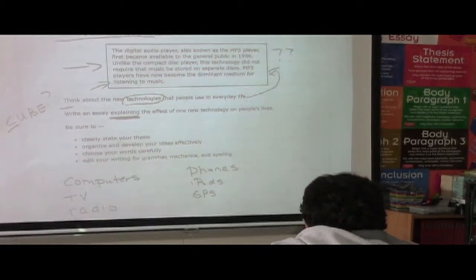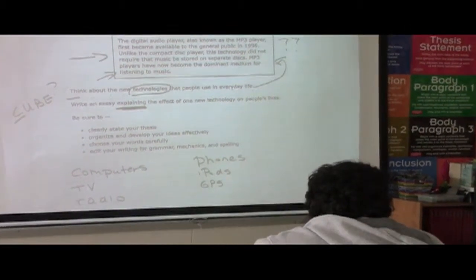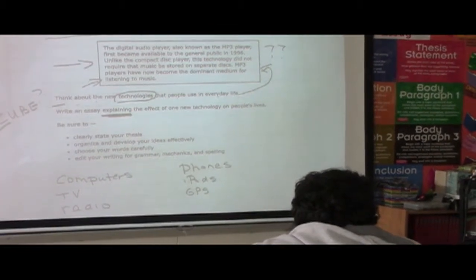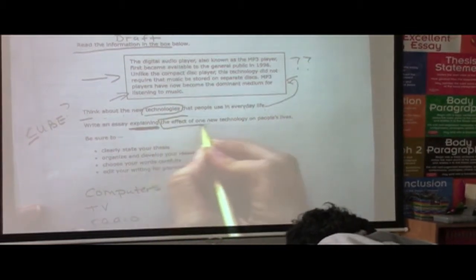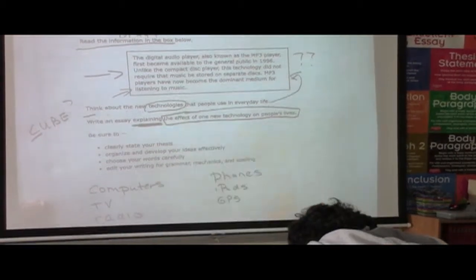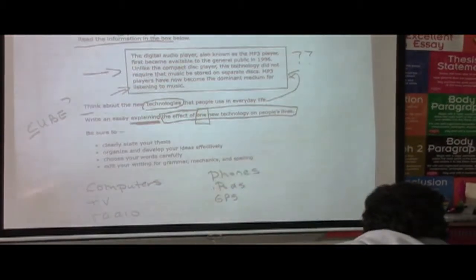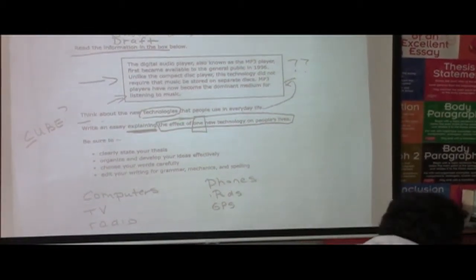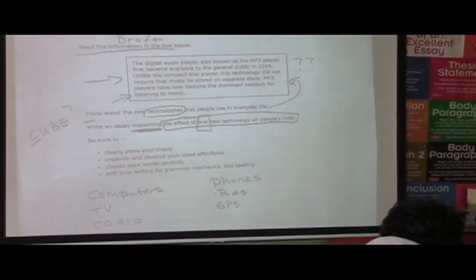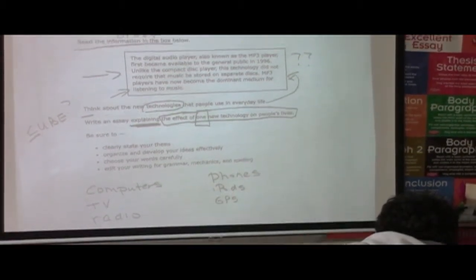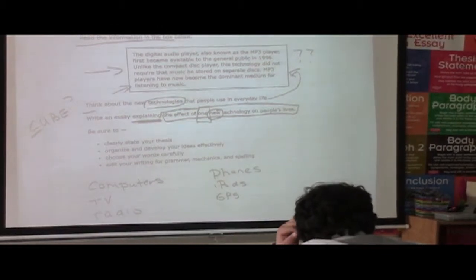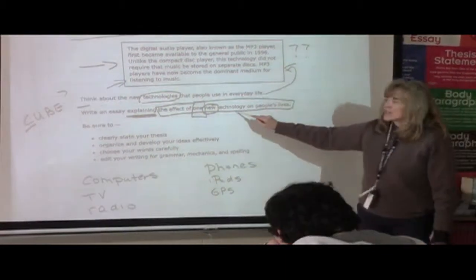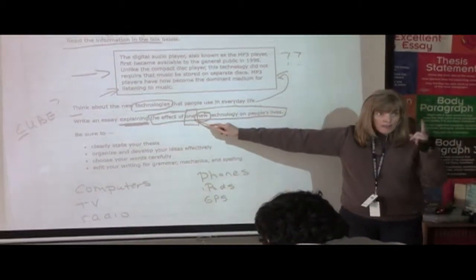B means to box. We're going to box in the demands of the prompt, which means we're going to box in what we need to explain. What do we need to explain? One new technology. The effect of one new technology on people's lives. How many new technologies? One. I'm going to box that word, too, because that's very important. I can't talk about computers and TVs and radios. I've got to pick one, what kind of technology? Whatever. New. One new.